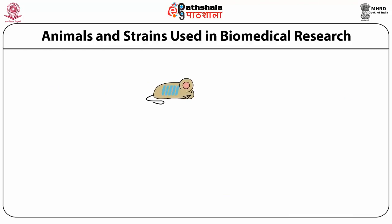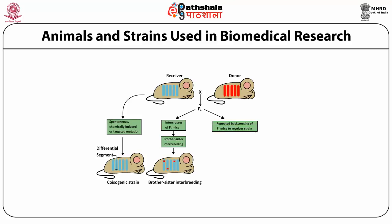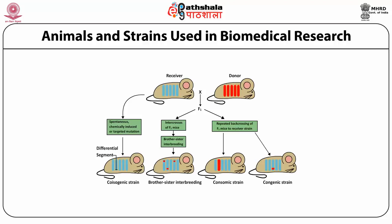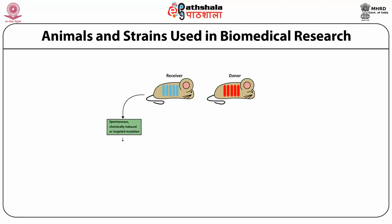This graphical representation shows the varieties of inbred mouse strains. When a receiver and donor in homozygous condition are mated for many generations, we get an inbred mouse. When two inbred mice are bred — for example BALB/c and C57BL/6 — we get an F1 hybrid. F1 brother-sister mating produces inbred strains, and repeated backcrossing of F1 to the receiver strain produces congenic strains.